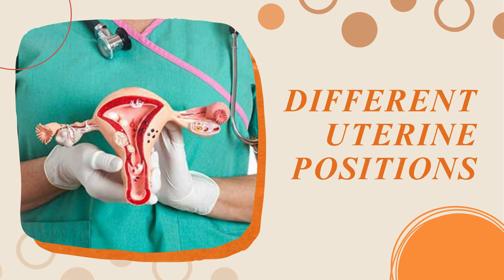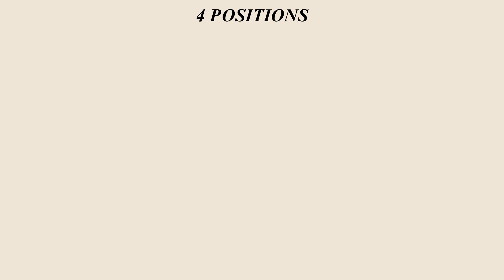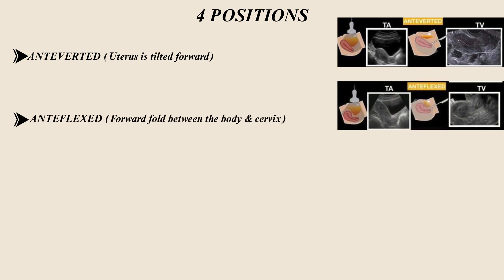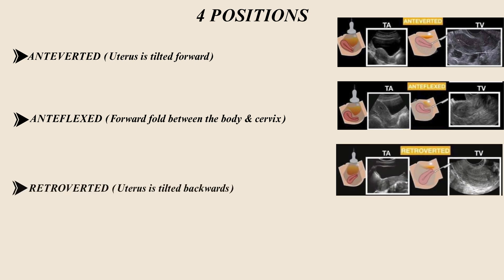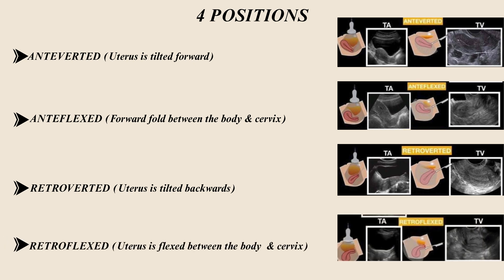Let's talk about uterine positions now. There are four uterine positions. Number one is anteverted, when the uterus is tilted forward. Number two is anteflexed, when there is a forward fold between the body and the cervix. Number three is retroverted, when it is tilted backwards. Number four is retroflexed, when it is flexed between the body and the cervix.